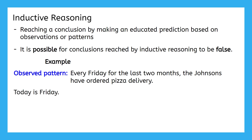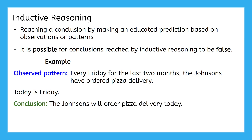Today is Friday. What conclusion do you think we can draw? The Johnsons will order pizza delivery today. This seems like a pretty likely outcome if they keep following their current pattern. But can you guarantee that this will happen? No, definitely not. There are lots of reasons why they might change their pattern. For example, maybe today is someone's birthday in the family and instead they're going to go out to a restaurant for a special meal. This is what I was referring to when I said it's possible for conclusions reached by inductive reasoning to be false — they will only be true if the pattern continues the way we've observed, which we can never guarantee.